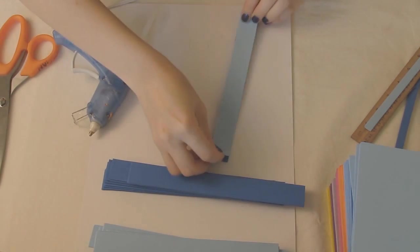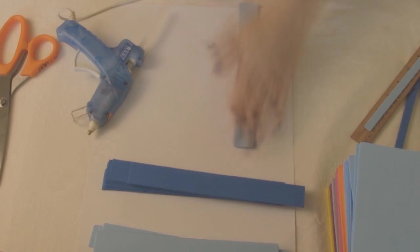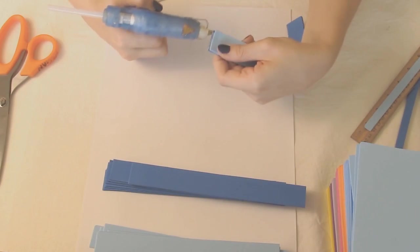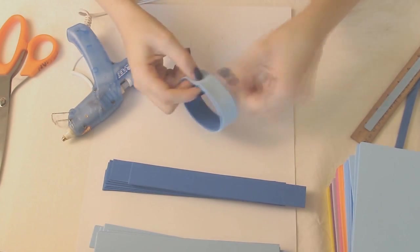To create the base I started by layering two strips together to give it a bit more thickness and strength. From there you can just glue the ends together and make sure the circle is secured.